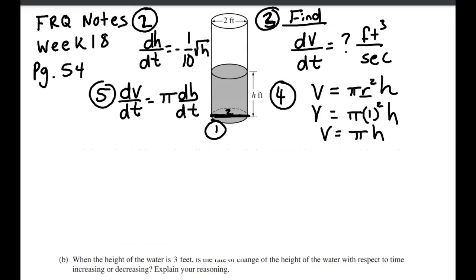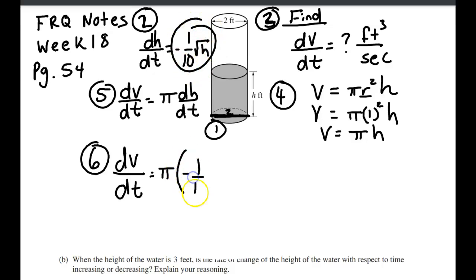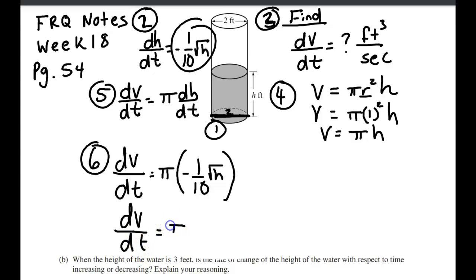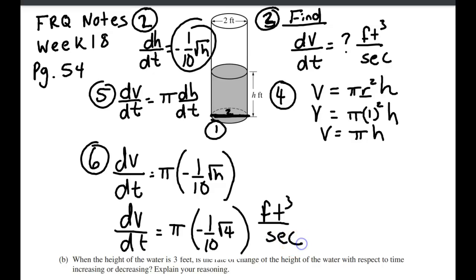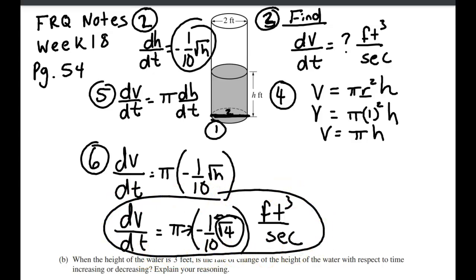So next step — in step 6, we're going to plug in what we know. I know dH/dt is the given formula, so I'm just going to plug that in there. We also know that H is 4, so now I'm going to plug that in for H. Then we want to include our units. That's the final answer. You could simplify — take the square root of 4 to get 2, reduce the fraction and put the π on top. But on FRQs, you don't really have to simplify it.